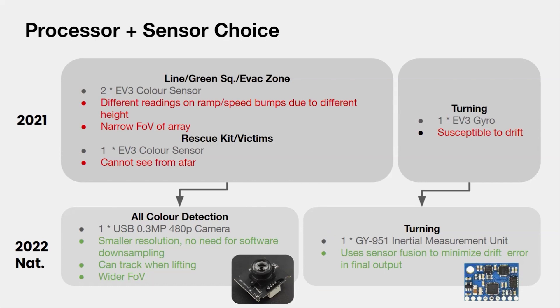Hence, for this year, we offloaded all of that work to a USB camera. It has low resolution so less processing power is required to downsample in software. It can still track over bumps and the ramp because it can see the black of the line regardless of height, and the wider field of view means it can regain the line more easily. For example, in a single frame you can detect whether a green square is before or after a horizontal line.